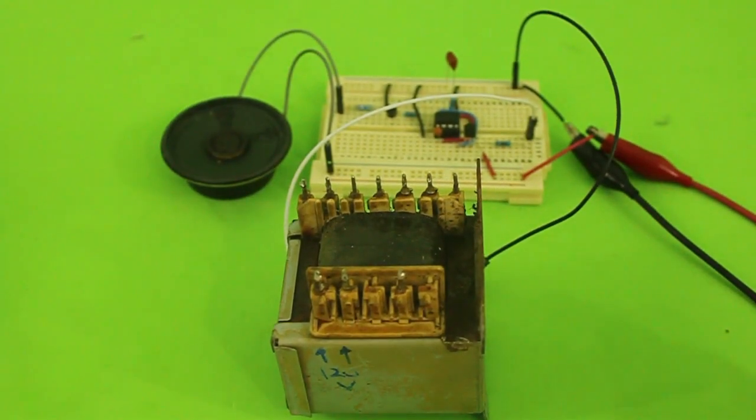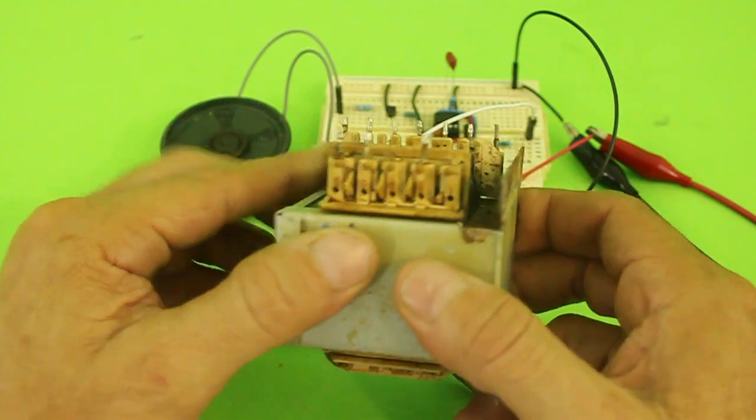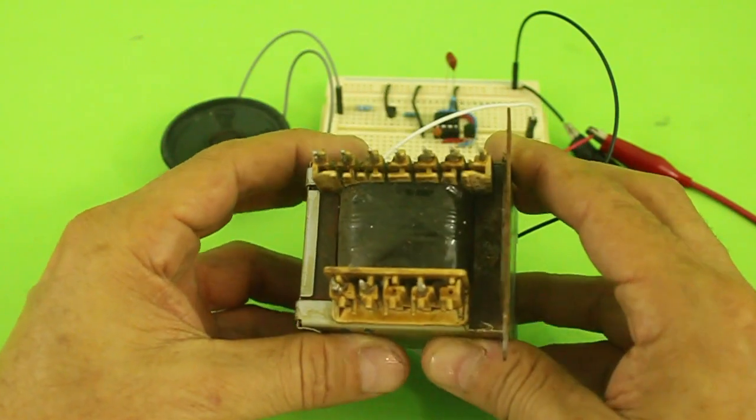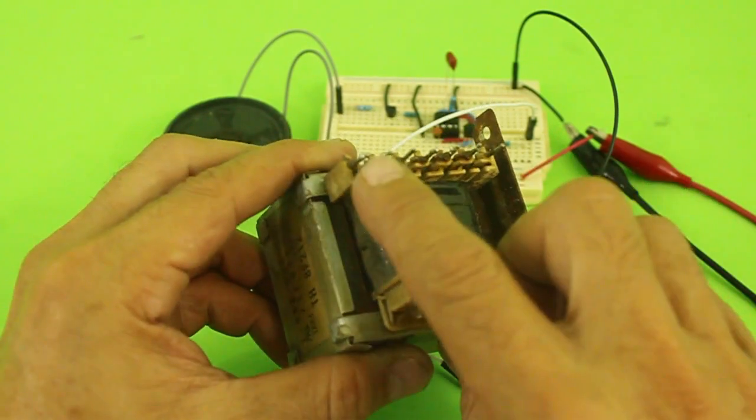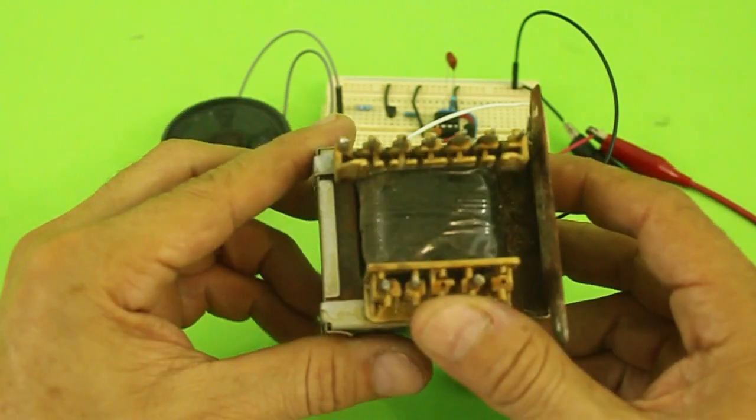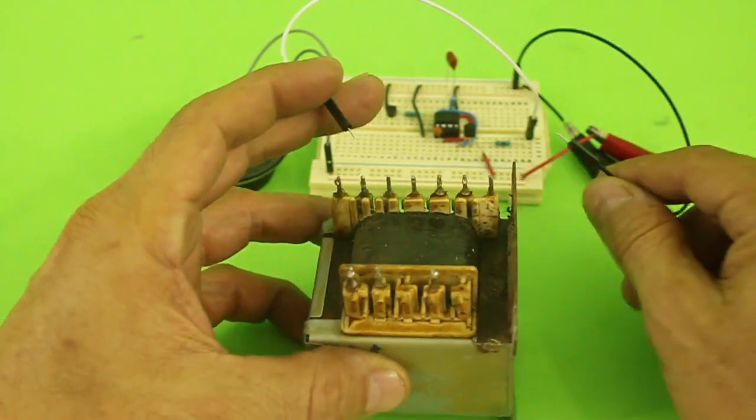As an example of use, I have this transformer of which I only know that these two pins correspond to the primary, but the secondary has multiple coils. So we don't know which pair of pins correspond to a single coil. Let's check that with our tester.